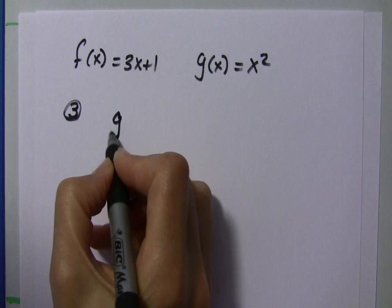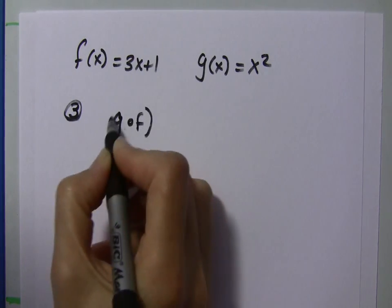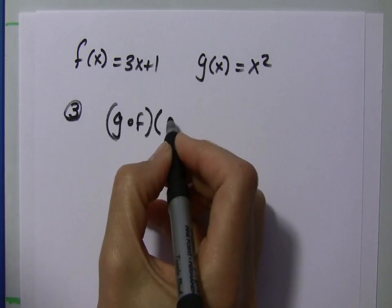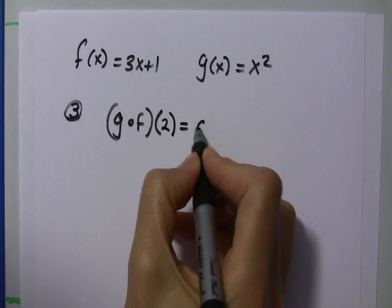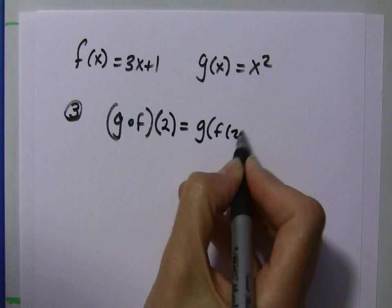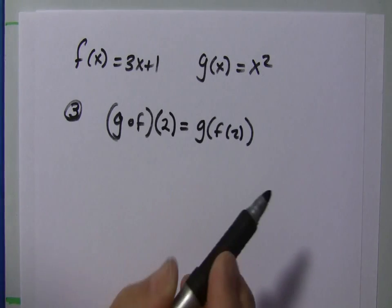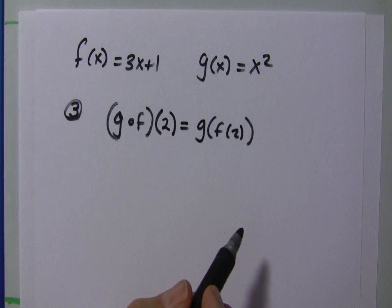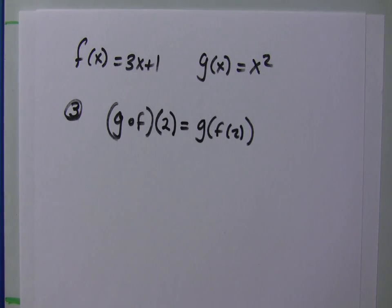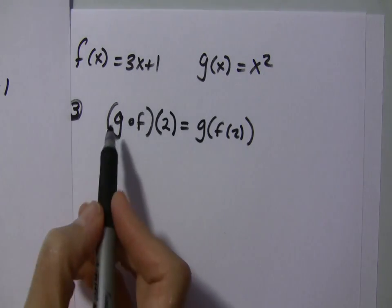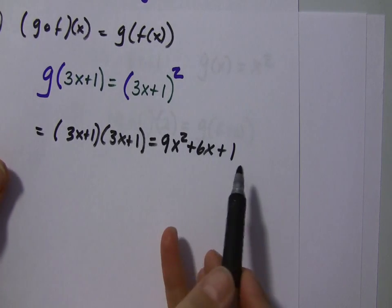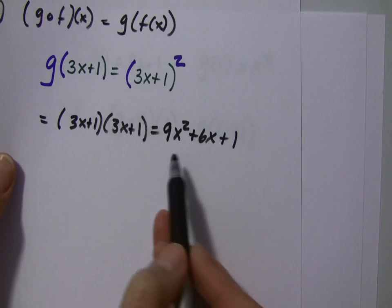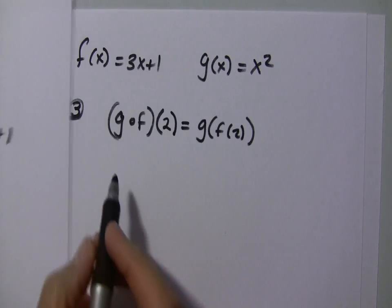Let's say we want g of f of a number, let's say 2. We could look at this as g of f of 2 if we wish. There are two ways to do this. First of all, since we already calculated the g of f of x, we already calculated g of f of x and we found it to be this.